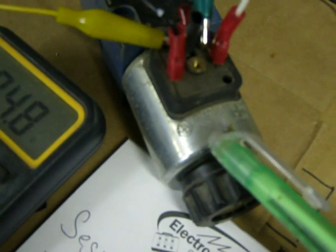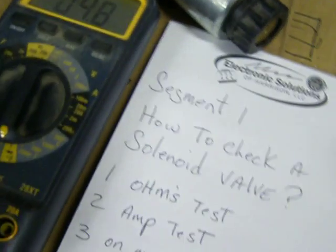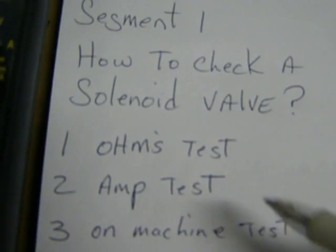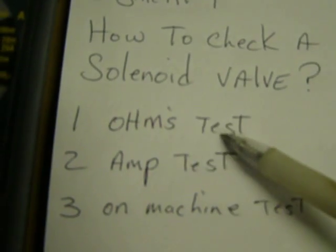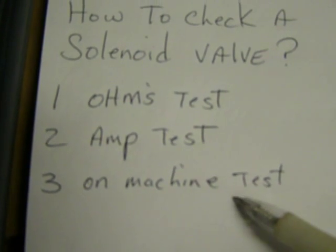So there's an inrush current too of turning on. It's going to draw a little bit more. So today what we're going to go over is, we went over the ohms test, we went over the amps test, and then you can do an on-machine test.